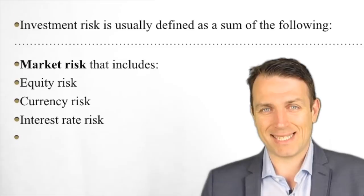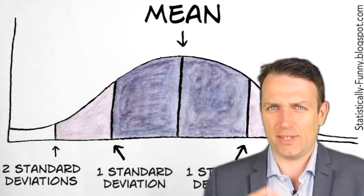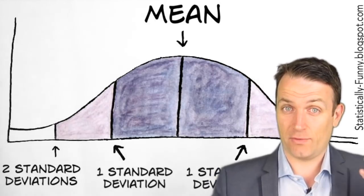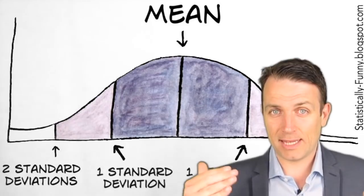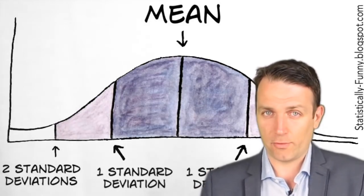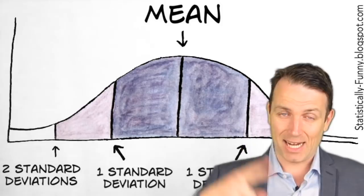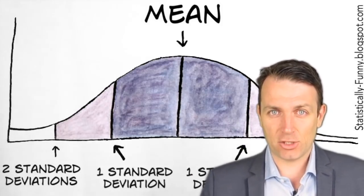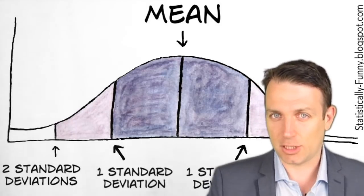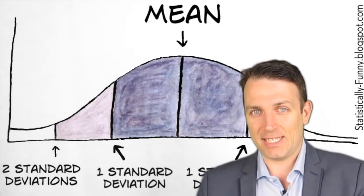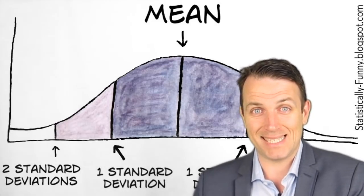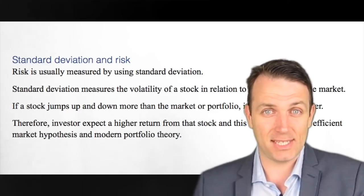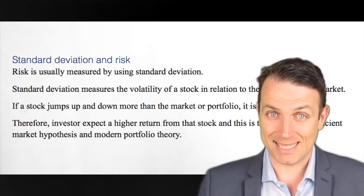Academics measure risk as standard deviation — a measure of volatility — specifically how much the price of a security is more volatile relative to a portfolio or a market. The more volatile a stock is, the more it's considered risky. So academic risk is measured from what the market says about a stock, whereas investors measure risk from what the business carries: what can go wrong with the business, the dividends in the future, and so on — not what the market says about it.